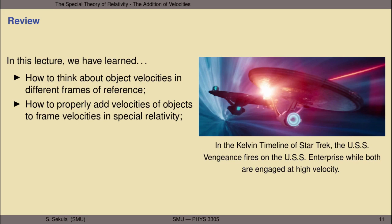To review: in this lecture, we have learned how to think about object velocities in different frames of reference and how to go from the coordinates of an object in motion to its velocity in different frames. We've then used that information to figure out how to properly add velocities of objects to frame velocities in special relativity. We've looked at several case studies and seen that everything comports with the postulates of special relativity, which themselves comport with observations of the natural world.